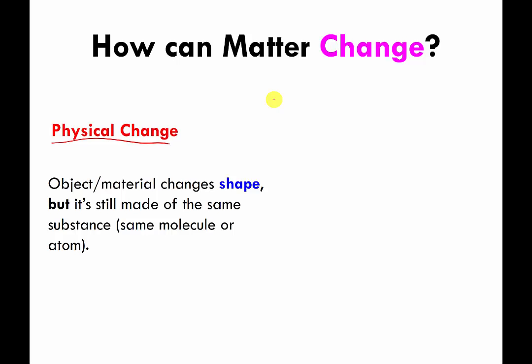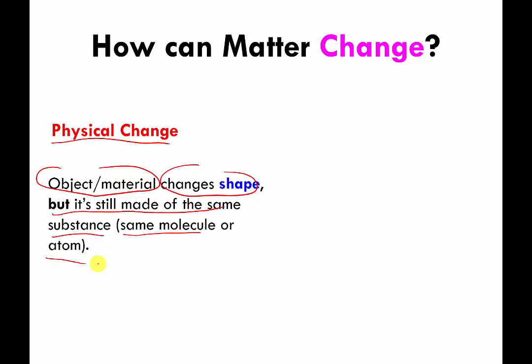Physical change is when an object or material changes its shape, but it's still made of the same substance. In other words, it's still made of the same molecules or the same atoms.